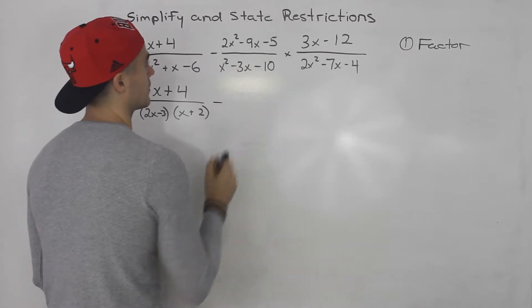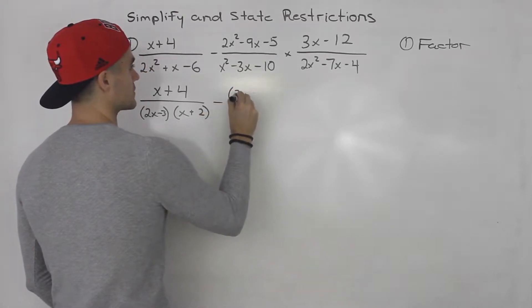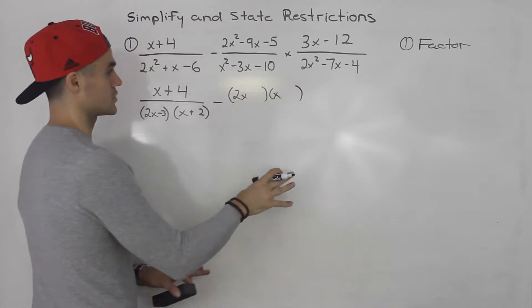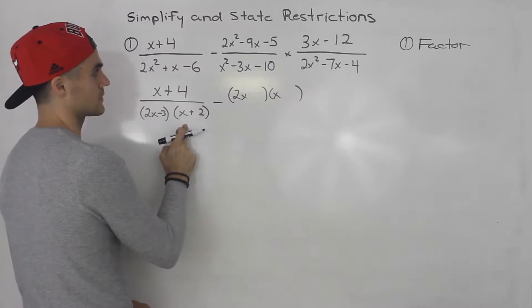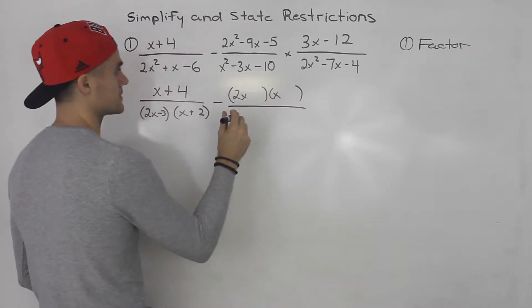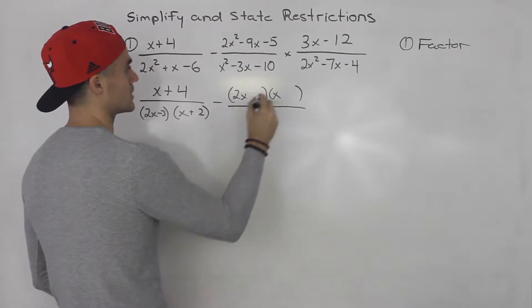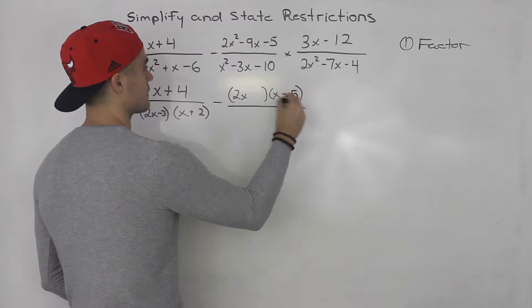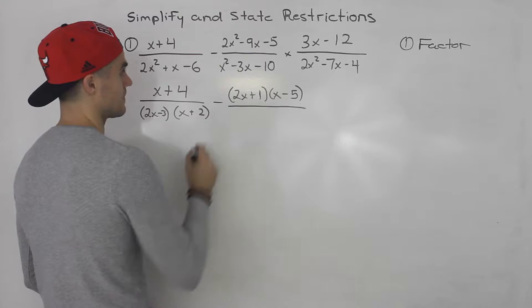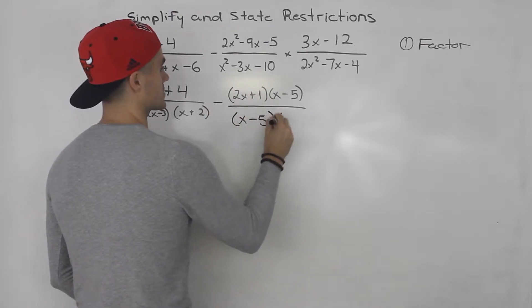Then up here, 2x squared minus 9x minus 5, that would factor. You want to make sure you do the decomposition on the side and you're getting these yourself. I'm doing them mentally. So this could be 2x plus 1 times x minus 5. Then over here, this factors into x minus 5, x plus 2.